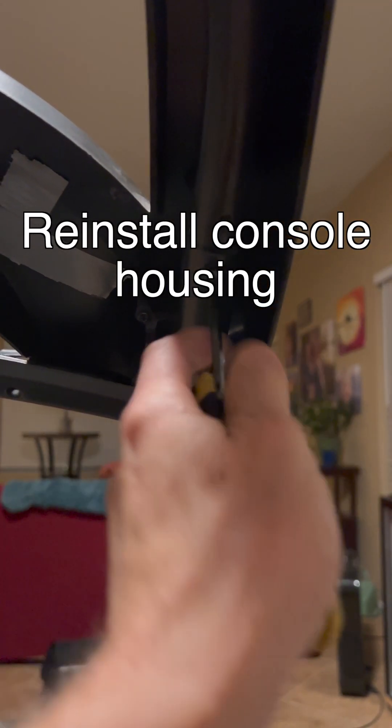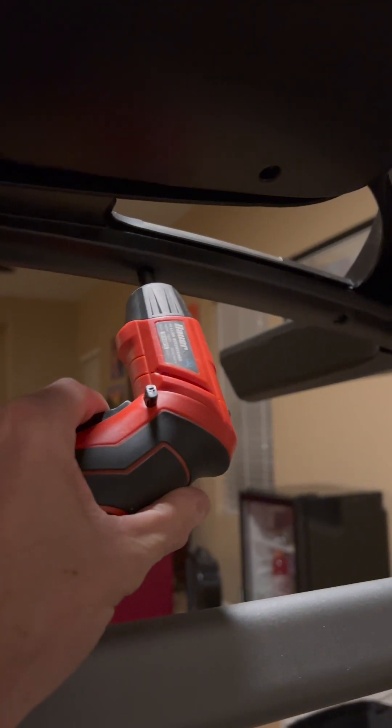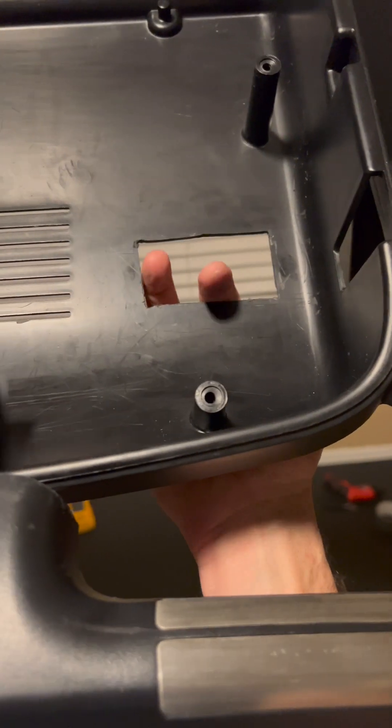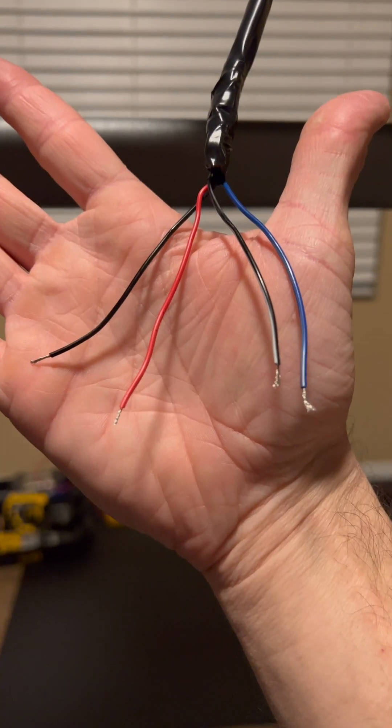Reinstall the console housing first and then put the bar on top and tighten everything down. From the 8-pin connector you'll only need four of the wires. One negative, one positive, another ground negative and then blue for the speed wire.